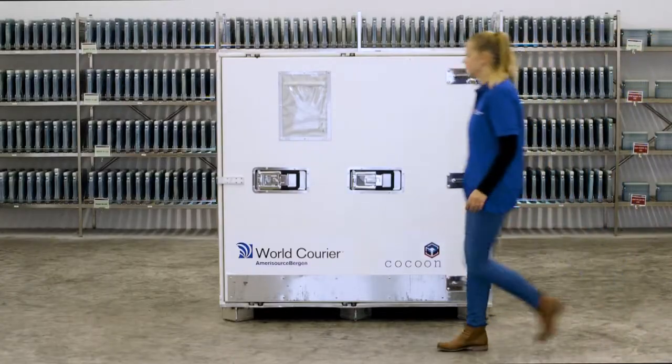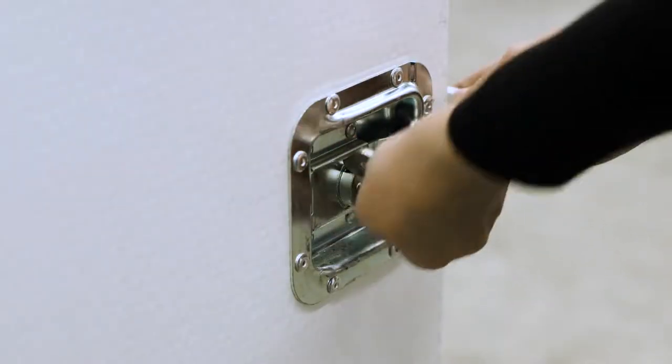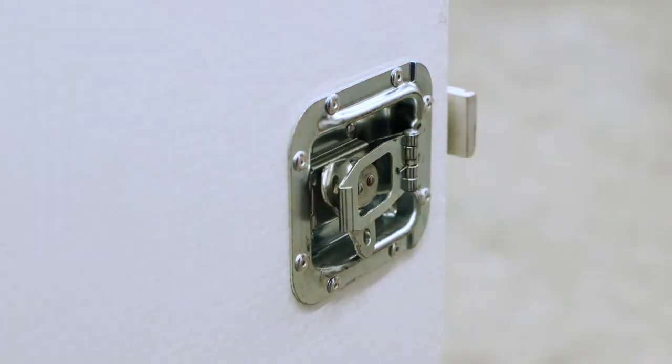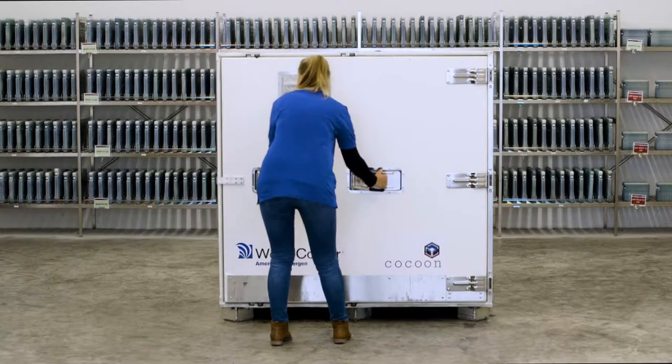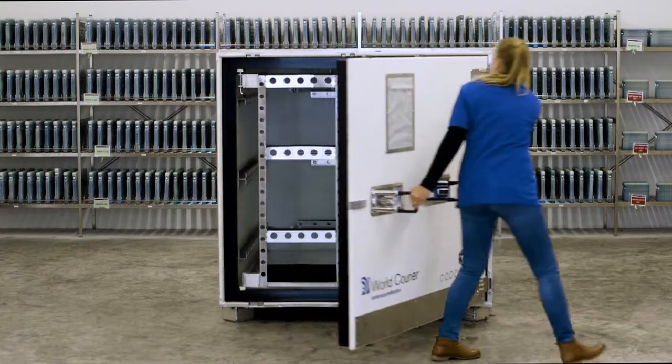To open the Cocoon the side lock is turned counterclockwise allowing for the hatch to be pulled back. The front locks are then pushed upon one after the other to release the handles that will fully open the unit.